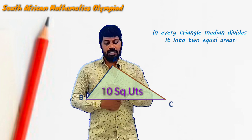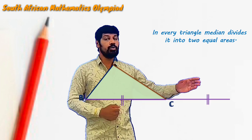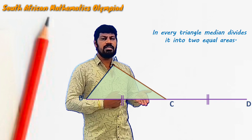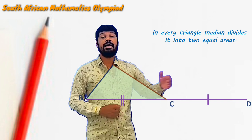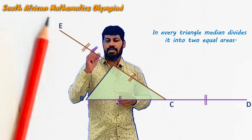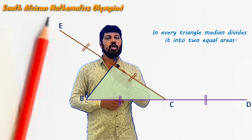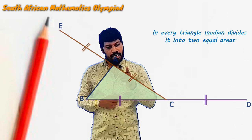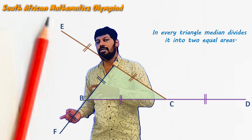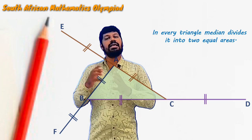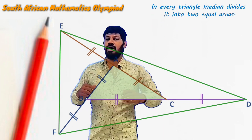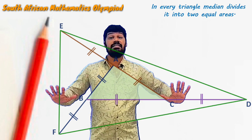The side BC is extended to a point D such that BC equals CD, meaning C is the midpoint of BD. Similarly, side CA is extended to a point E such that CA equals AE, meaning A is the midpoint of CE. Side AB is extended to a point F such that AB equals BF, meaning B is the midpoint of AF. Finally, all three points D, E, F are joined, and we are asked: what is the area of triangle DEF?